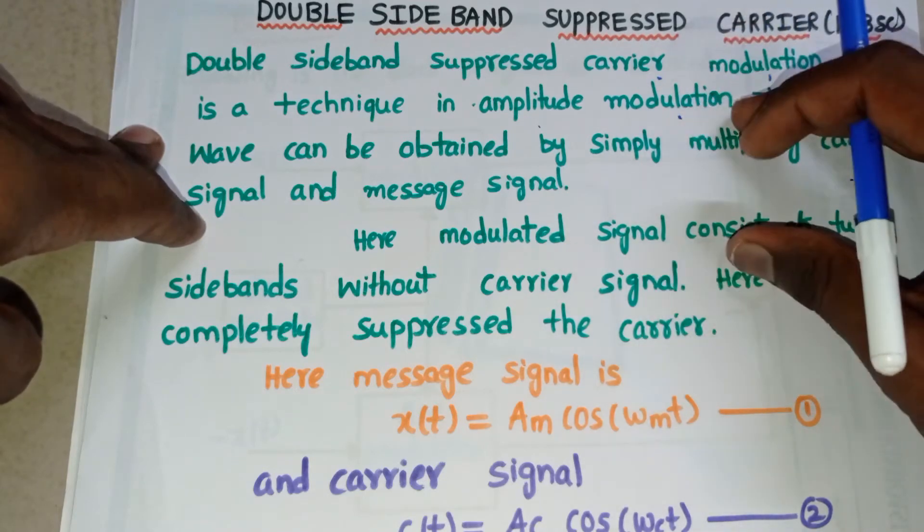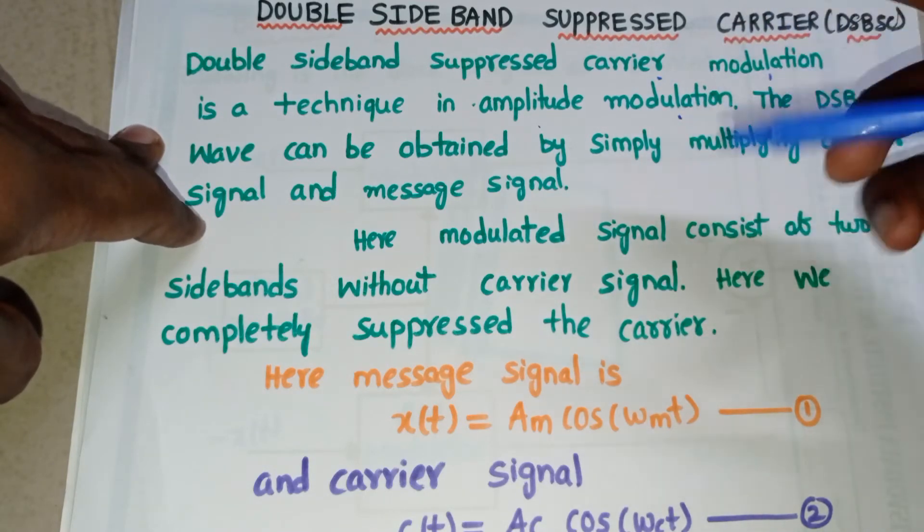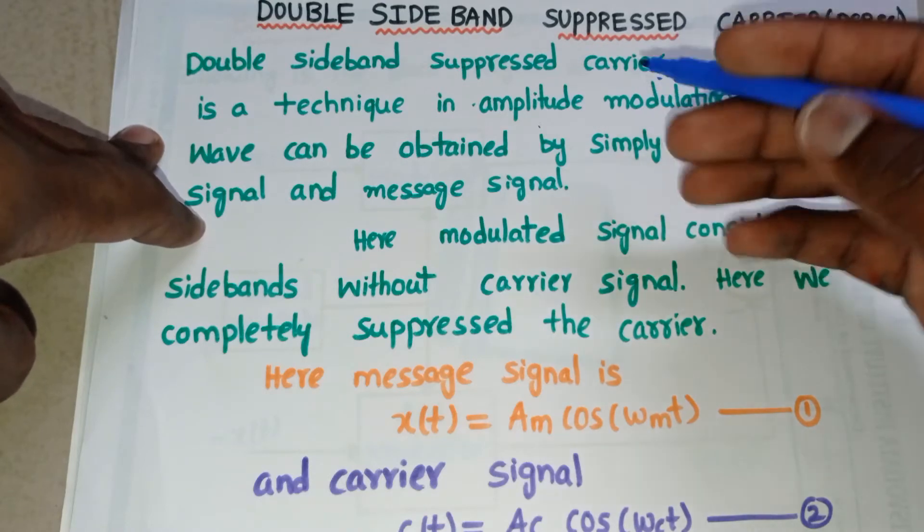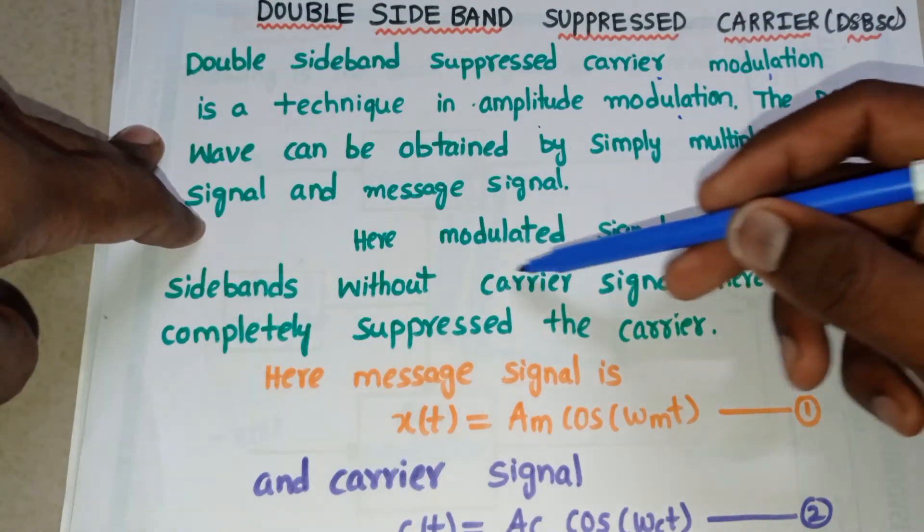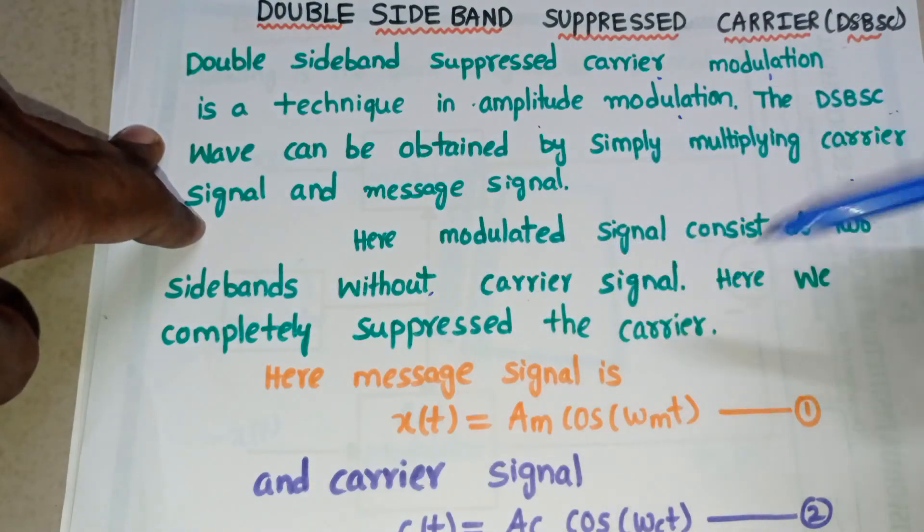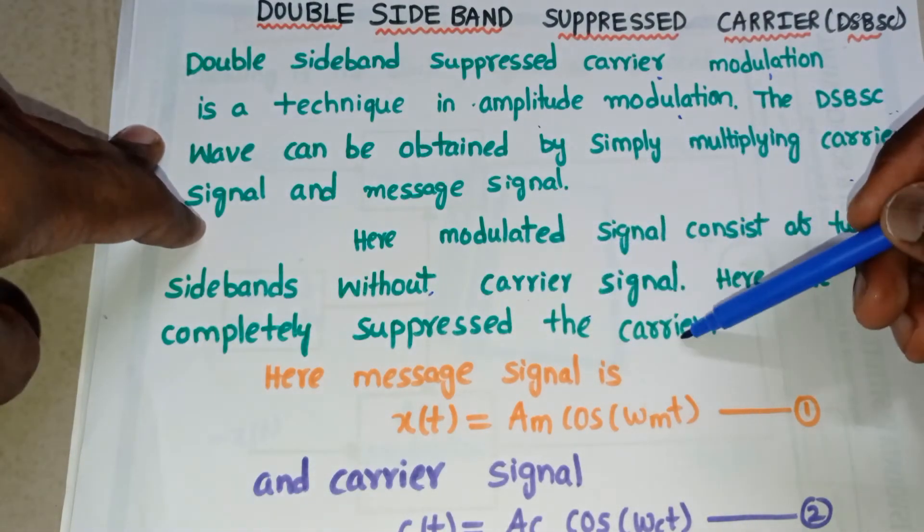In DSBSC modulated wave, we have two sidebands - one is upper sideband and another one is lower sideband. But here we don't have any carrier signal. We completely suppressed the carrier.